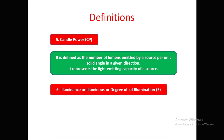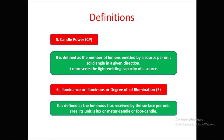The next definition is illuminance, or degree of illumination, represented as E. It is defined as the luminous flux received by a surface per unit area. Its unit is lux, meter candle, or foot candle. The equation is: E = phi / A (luminous flux divided by area).